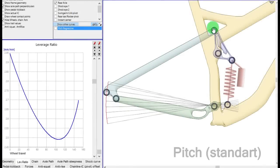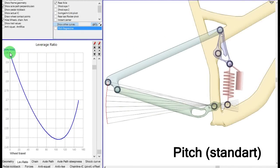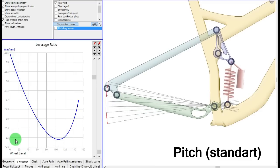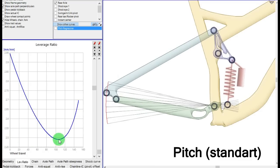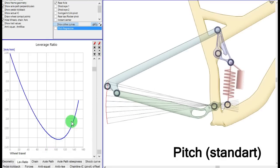For the standard pitch, this is the leverage ratio curves. As you can see, the bike starts with a leverage ratio of 3 and decreases to a leverage ratio of 2.5 at 100 millimeters of travel.